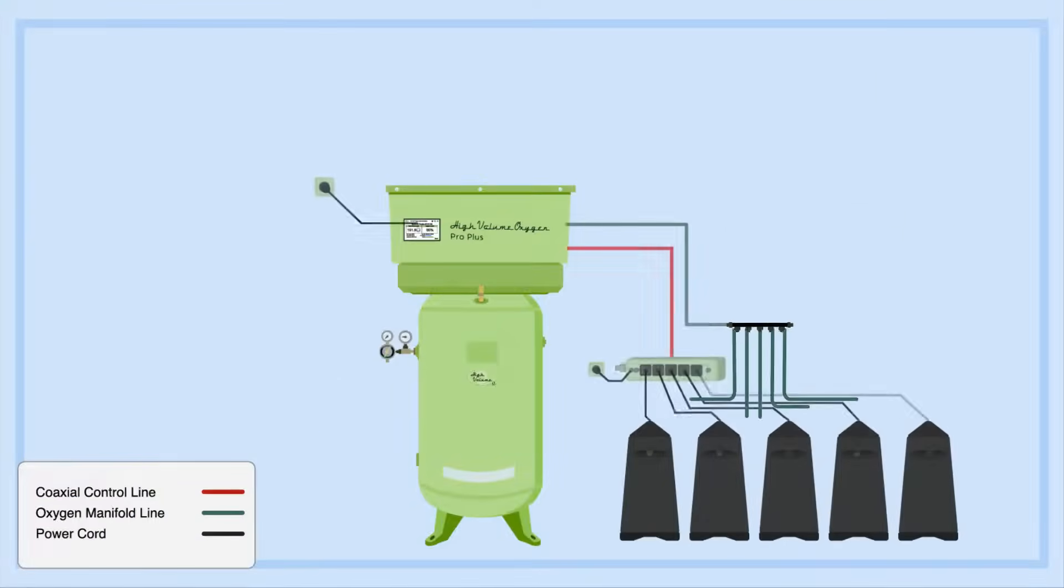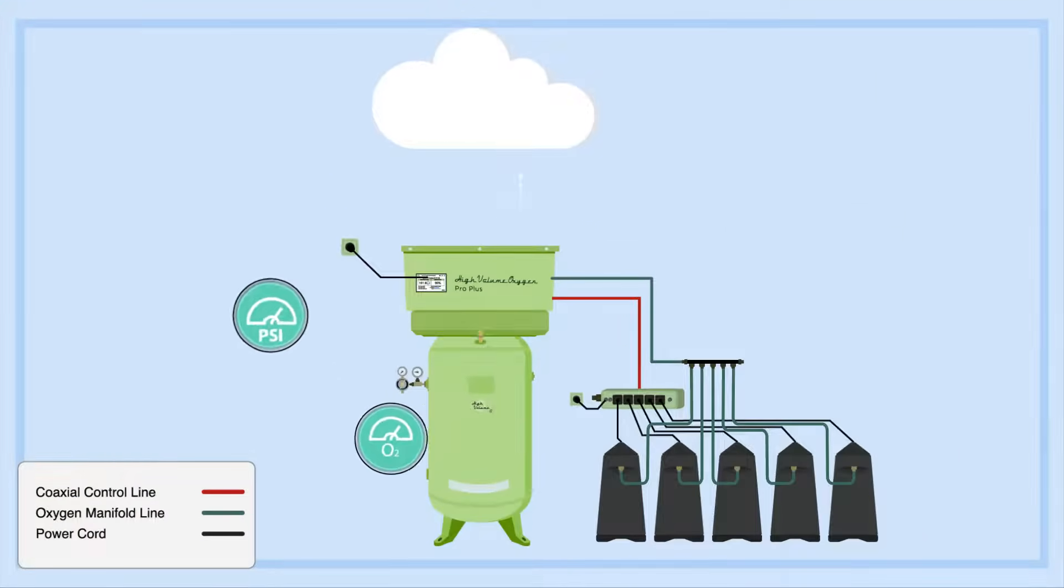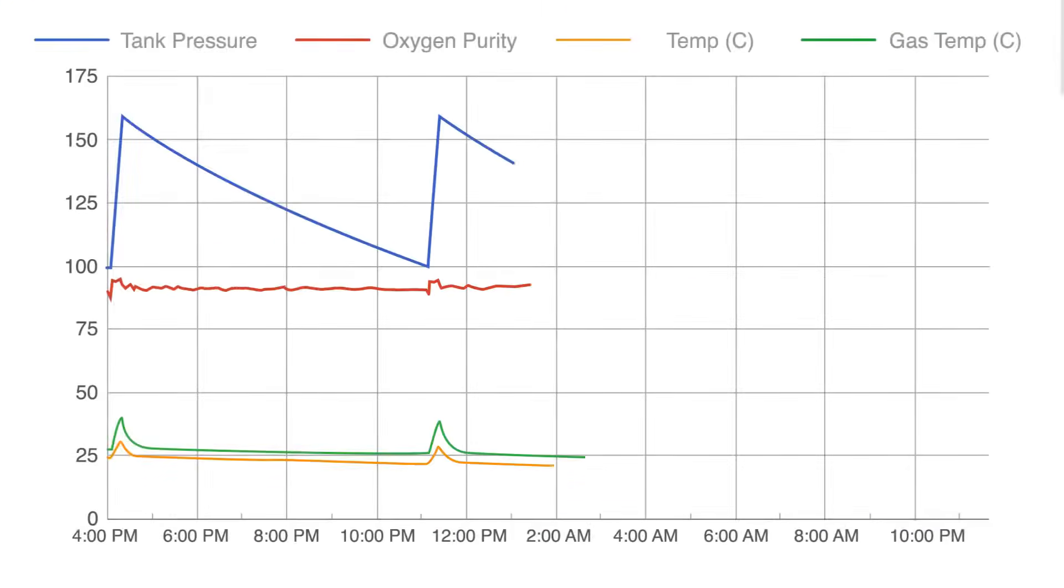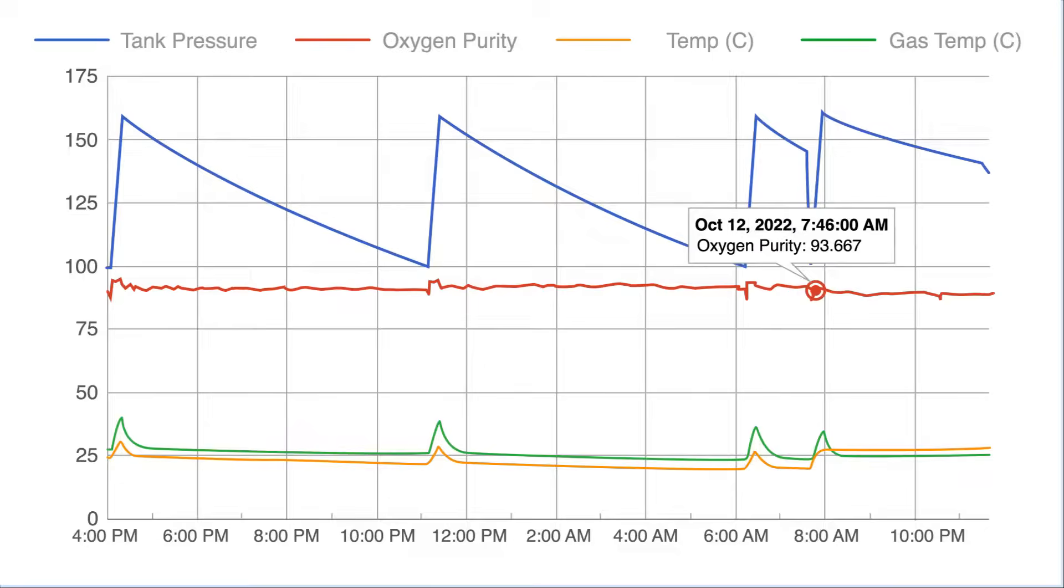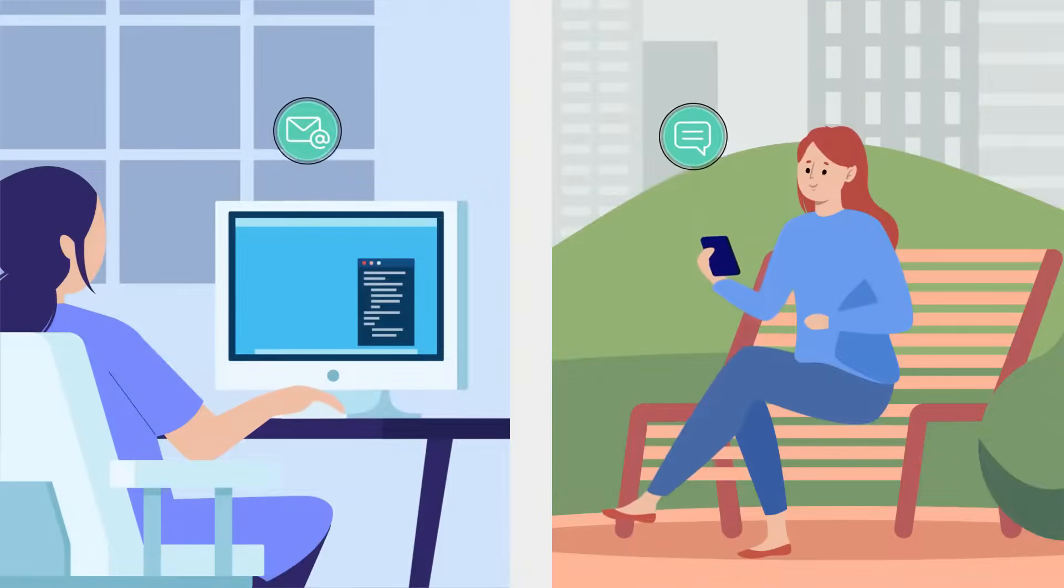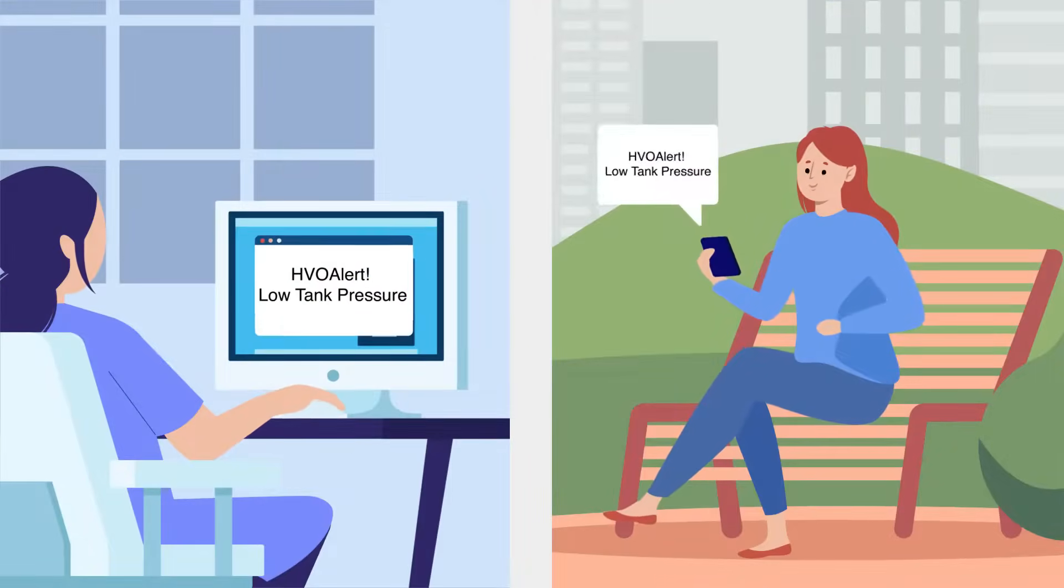Every HVO ProPlus system has built-in sensors that monitor tank pressure, oxygen percentage, enclosure temperature, and gas temperature, which it sends to the cloud every 10 seconds and can be viewed online. When actionable conditions are discovered, notifications are sent via email and text message.